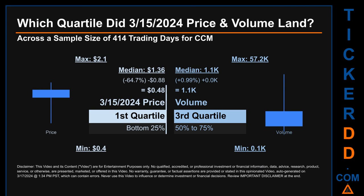Volume saw a max daily volume of 57.2 thousand and a minimum of 0.1 thousand. Quartiles tell us about the spread of a data set by breaking it into quarters, just like how the median breaks the set in half. Descriptively, CCM has a median price of $1.36; therefore, March 15, 2024's price was lower than that middle marker by 64.7%. The day's volume of 1,100 was more than the median by 0.99.